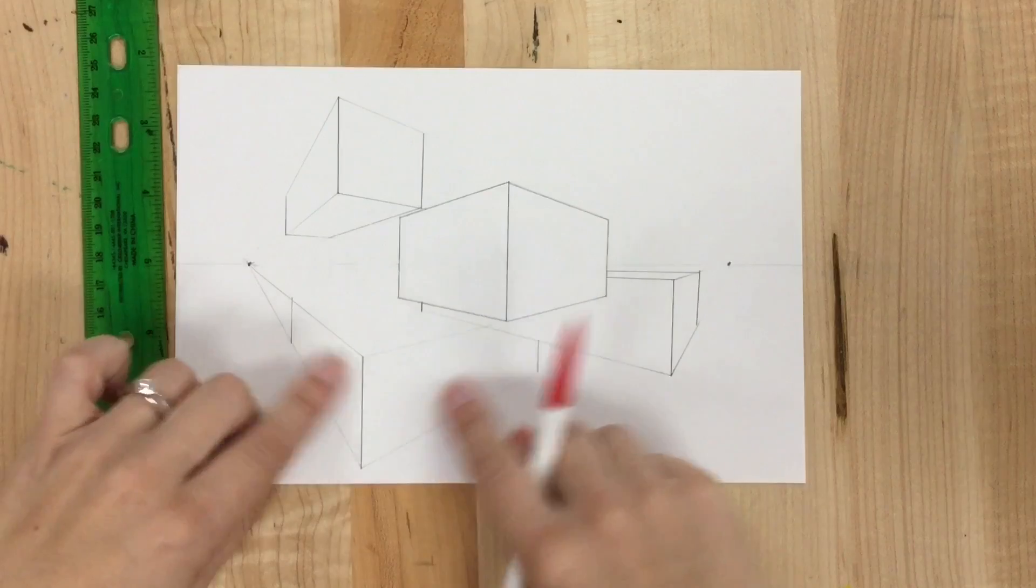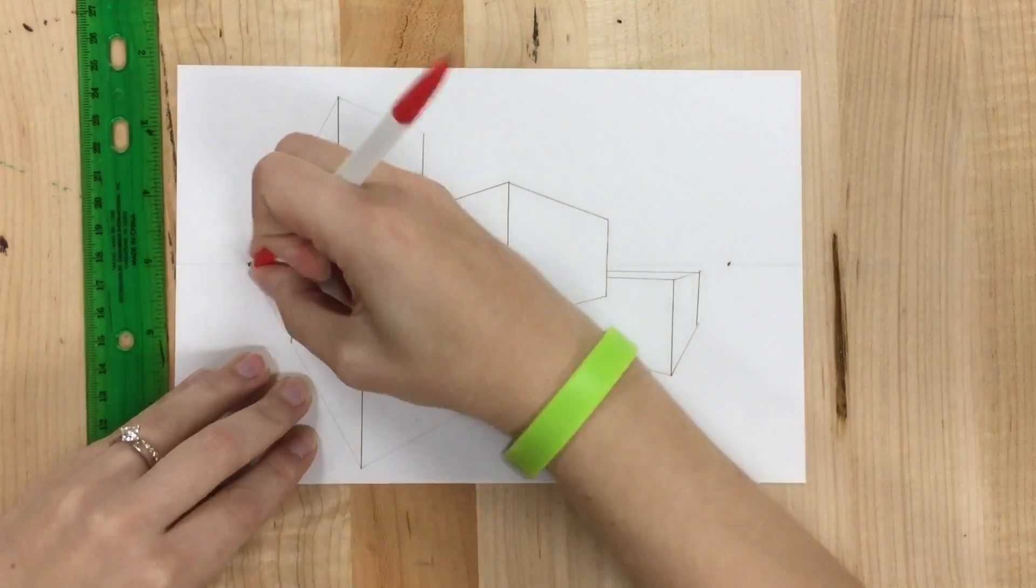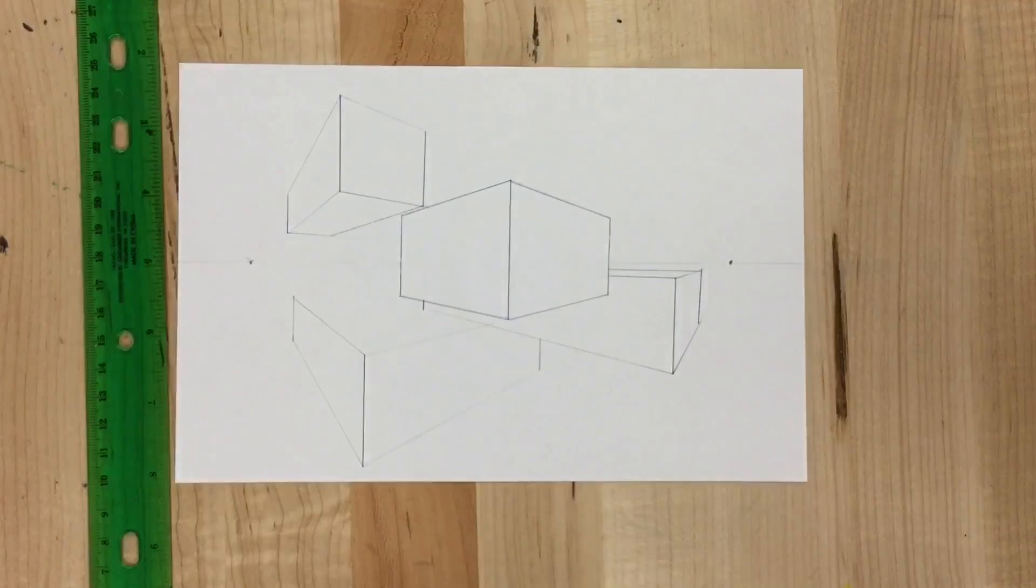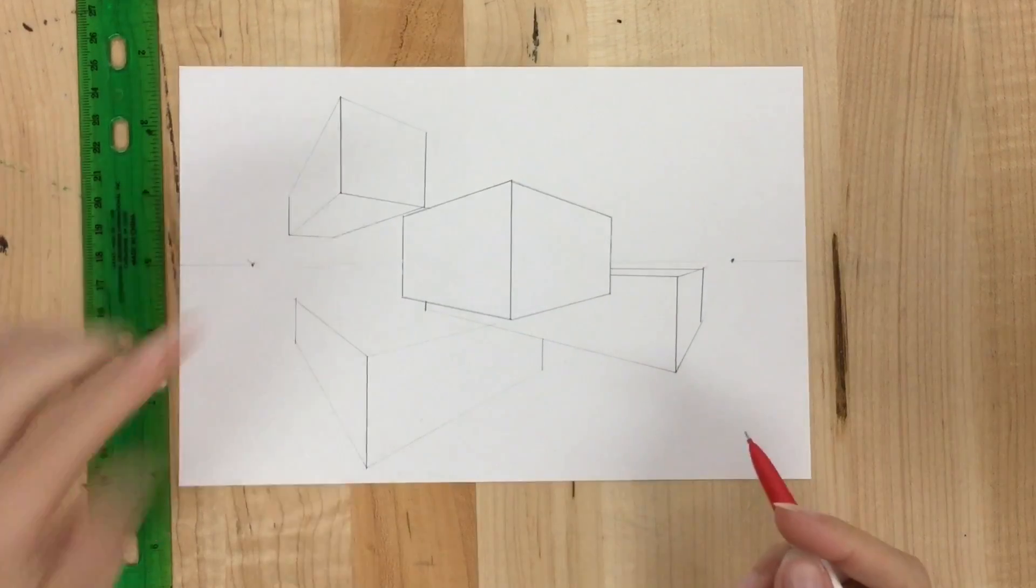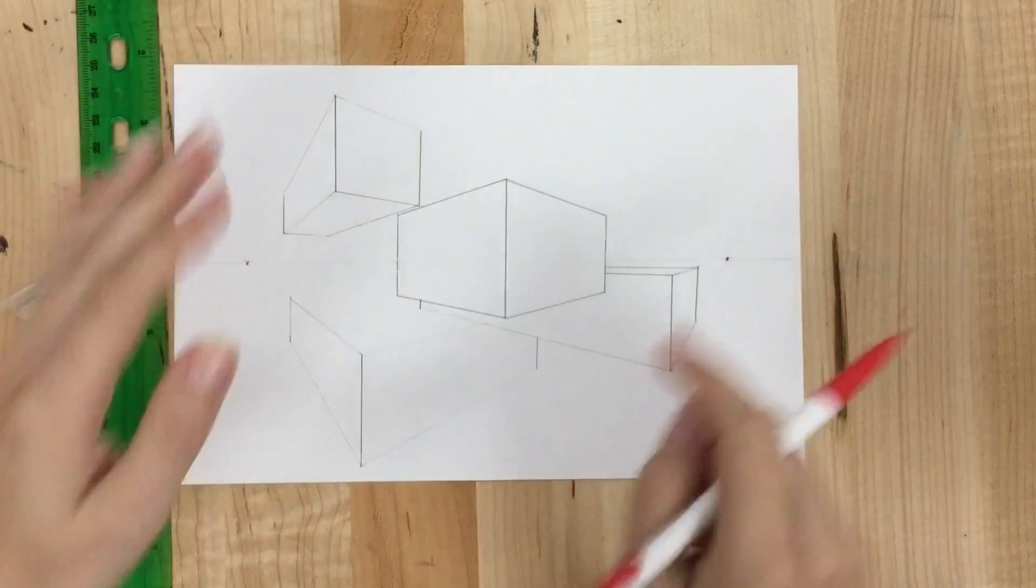Erase the lines that extend beyond my shape. And I've got one corner hanging out here, so it's on the left. I'm going to connect it to the right.